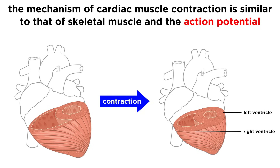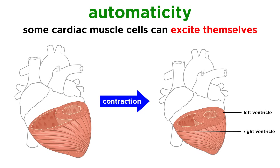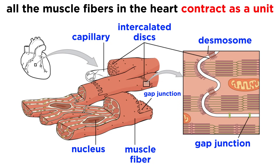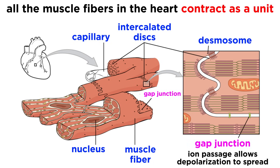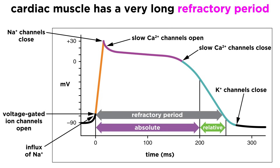The mechanism by which the heart pumps is similar to what we already know about skeletal muscle cells and the action potential, but there are some key differences. First, a small percentage of cardiac muscle cells can excite themselves — they do not need a nerve impulse. This is called automaticity. Also, contraction is highly coordinated; all the fibers in the heart contract as a unit, and this is because of the gap junctions that tie everything together, allowing ions and therefore depolarization to spread throughout the heart one cell at a time. And lastly, the refractory period is much longer in the heart, needing more time before another contraction can occur, which ensures the heart functions properly.